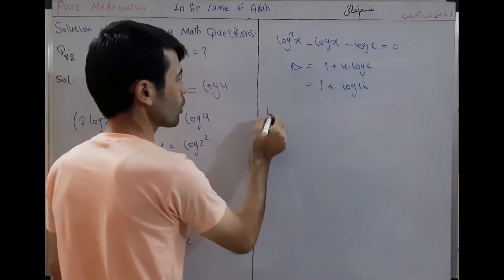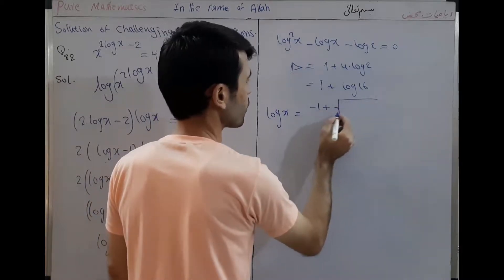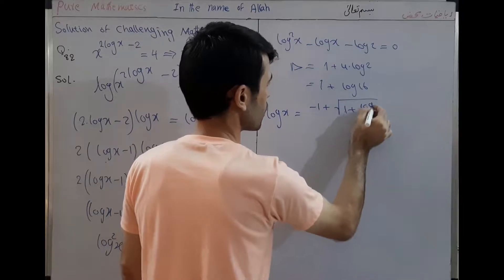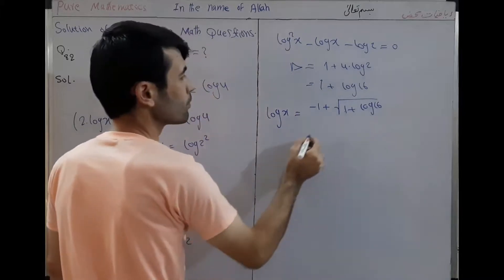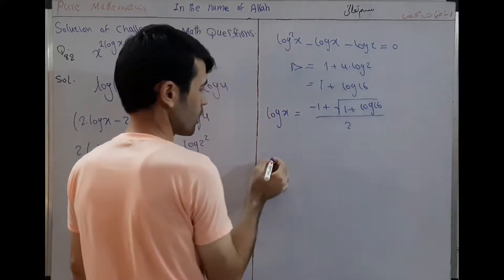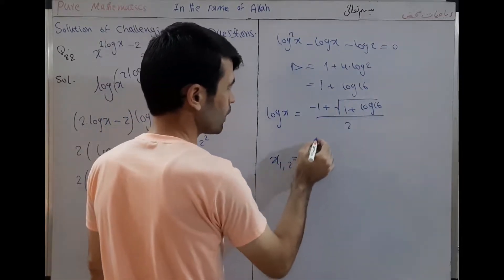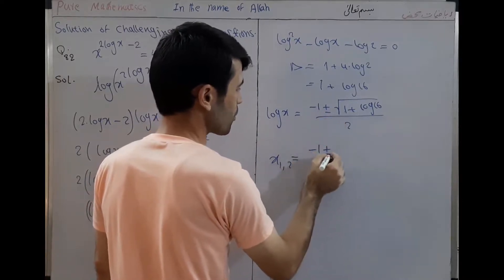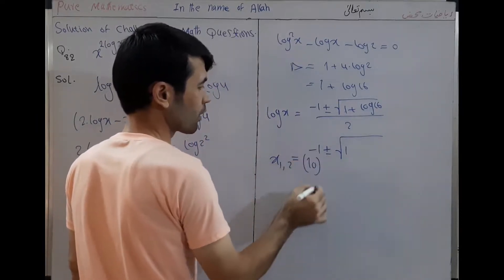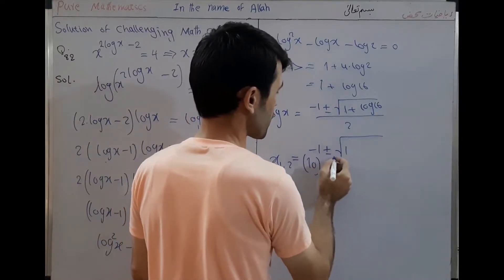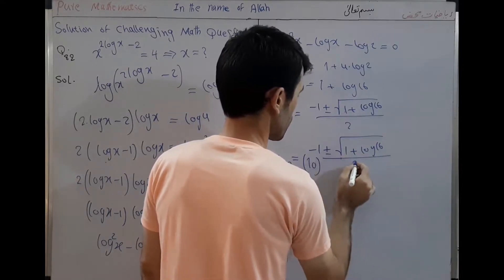Now log x is equal to minus 1 plus or minus square root of 1 plus log 16, divided by 2. Log 16 is used in the discriminant, and the full expression gives us 10 to the power of minus 1 plus or minus square root of 1 plus log 16, all over 2.